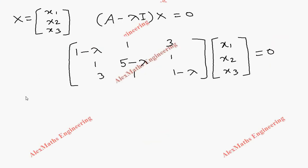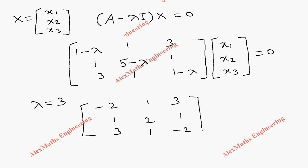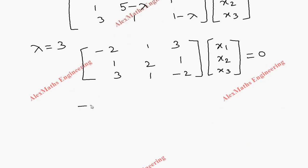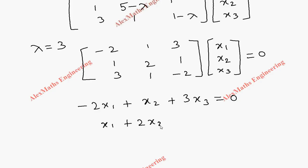Next, taking lambda equals 3: substituting gives the matrix with entries minus 2, 1, 3 in the first row; 1, 2, 1 in the second; and 3, 1, minus 2 in the third. Multiplying out gives the first equation: minus 2x1 plus x2 plus 3x3 equals 0, and the second: x1 plus 2x2 plus x3 equals 0.